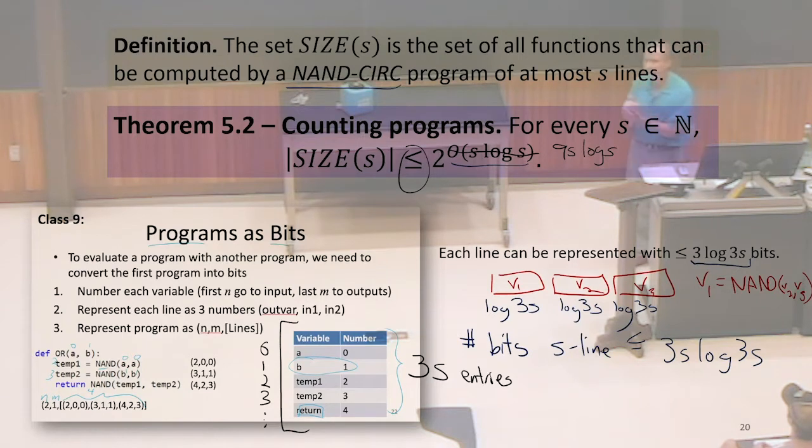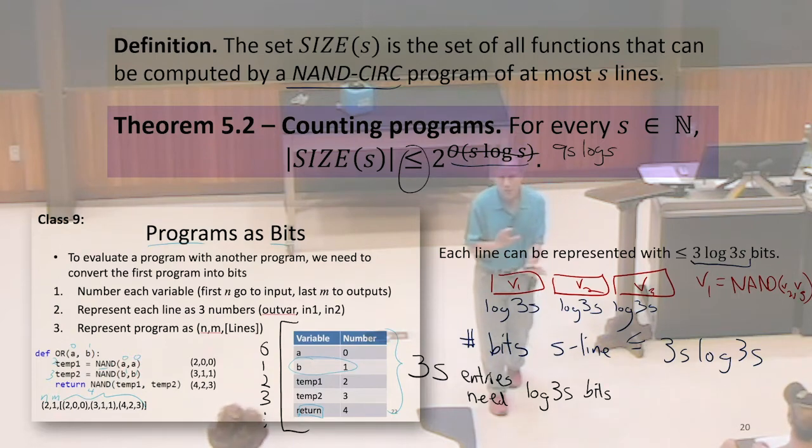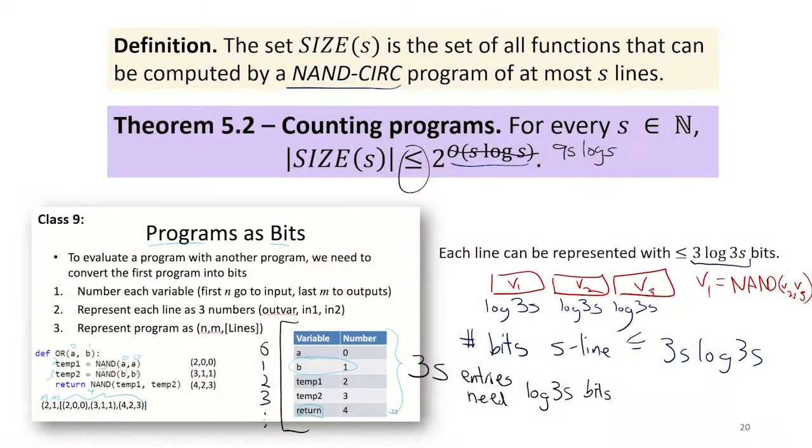Now we just need to represent the numbers from 0 to 3S minus 1. We can do that with log of 3S bits. And this is base 2 log. We're not trying to get the tight bound here. We're just trying to get some upper bound to know that the actual number of bits we need is less than or equal to this.